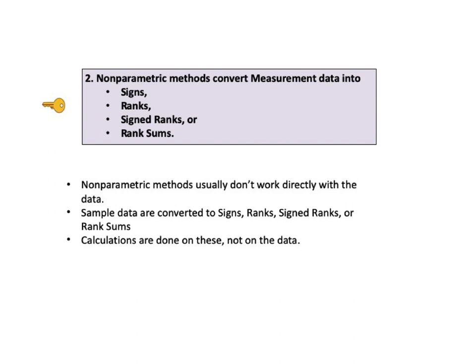Nonparametric methods convert measurement data into signs, ranks, signed ranks, or rank sums. One reason that nonparametric methods can use data from any distribution is that they usually don't work directly with the data. The sample data are converted to signs and/or ranks, and the numerical values of the data are lost before any calculations are done. Calculations are done on the signs or ranks or signed ranks or rank sums, not on the data. So it makes no difference what type of distribution the source data have. You don't have to do all this manually — just enter the data into software for the appropriate test and it will do the rest.